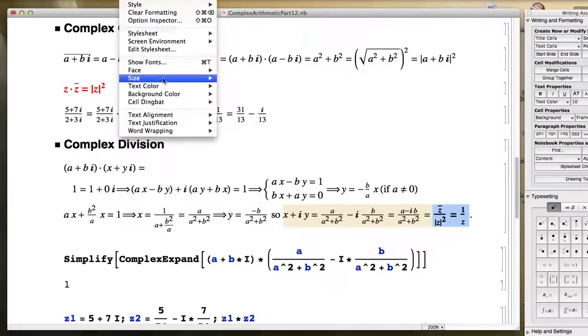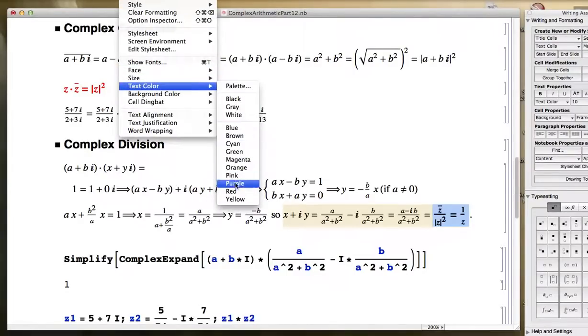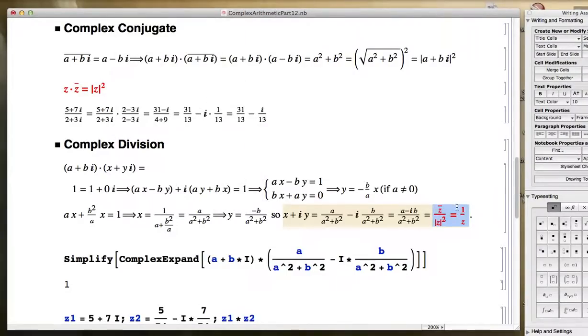There's another way that you could see why that works. And that other way would be to take the expression 1 over z and multiply both the top and the bottom of that fraction by z̄, the complex conjugate of z. On the top, 1 times z̄ is z̄. On the bottom, z times z̄, just like I have up here, gives you the square of the modulus of z. So this is another important equation to make sure you know.